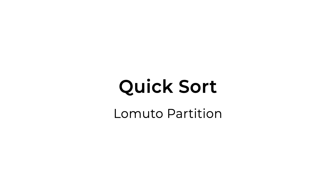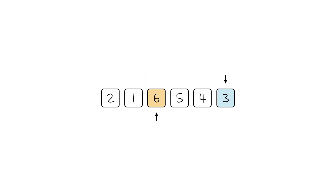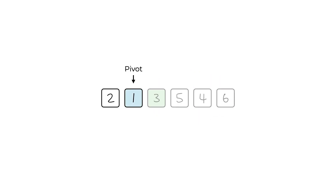Welcome back to the channel. In today's video we'll be focusing on quicksort using the Lomuto partitioning scheme. Similar to merge sort, quicksort is also a divide and conquer algorithm. The idea is to have a pivot, which can be the first element, the last element, or even the median. In this video we'll use the last element as the pivot.